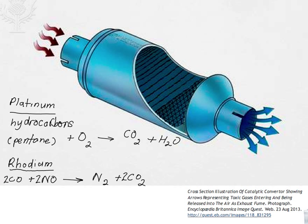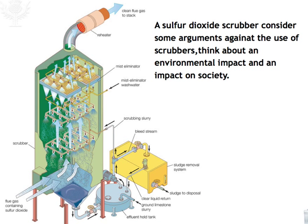The use of catalytic converters plays some part in blocking the release of oxides of nitrogen. But at the same time, it does not stop the addition of carbon dioxide. The sulfur dioxide scrubber is another end-of-pipe treatment that blocks the release of sulfur dioxide, but it requires significant input of capital, and to run the entire system requires energy.